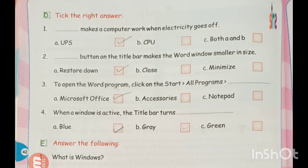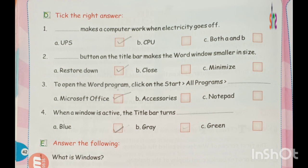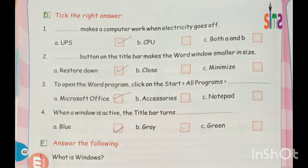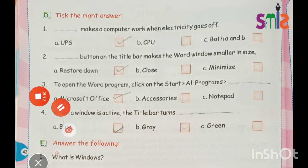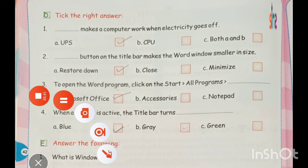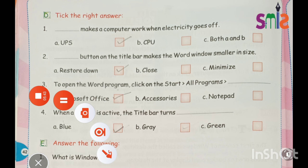Last: when a window is active, the title bar turns — blue, grey, or green. The answer is blue. So this way we have marked the correct answers.